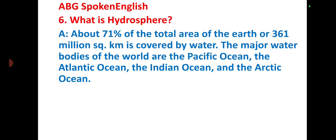What is the hydrosphere? About 71% of the total area of the earth, or 361 million square kilometers, is covered by water. The major water bodies of the world are the Pacific Ocean, the Atlantic Ocean, the Indian Ocean, and the Arctic Ocean.